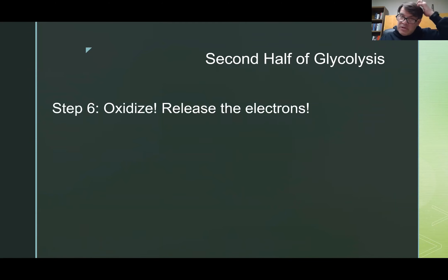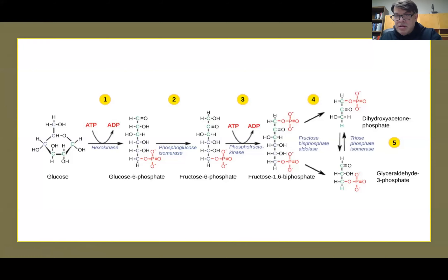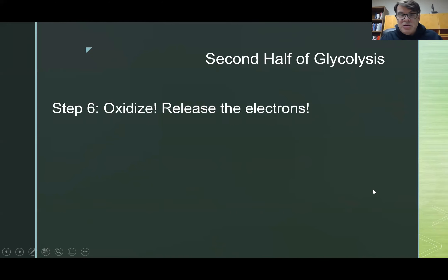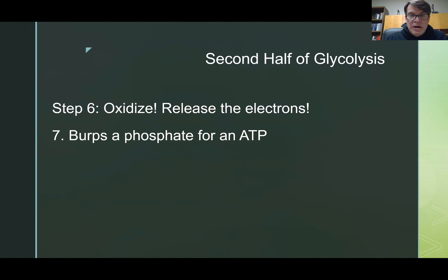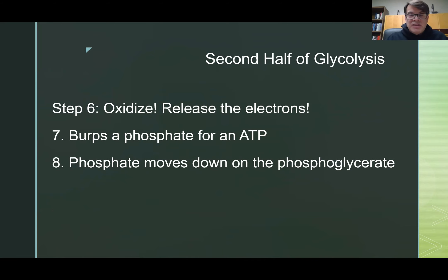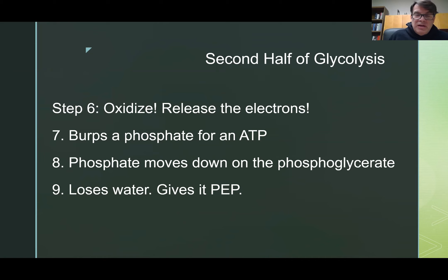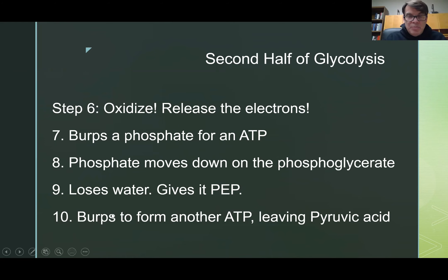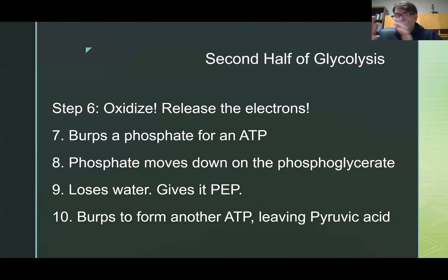Stage two. First, oxidize and release the electrons. The glyceraldehyde-3-phosphate is oxidized so that it loses electrons, and it burps one of its phosphates to make an ATP. The phosphate moves down the chain, loses some water, leaving a compound called PEP — phosphoenolpyruvate — and then burps another phosphate to form another ATP, leaving pyruvic acid. Once it gets here, the pyruvic acid goes into the next step — the citric cycle — for more energy processing.